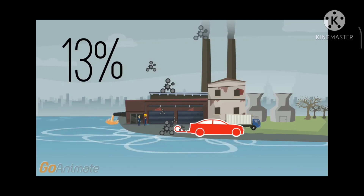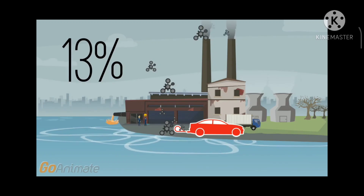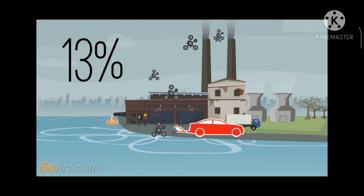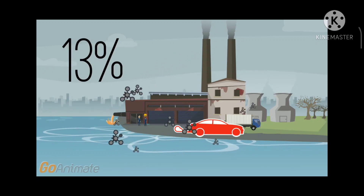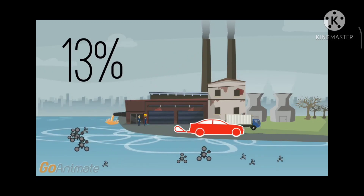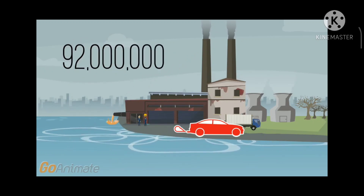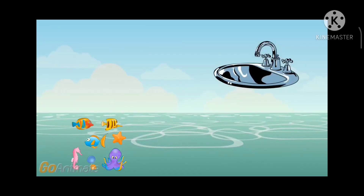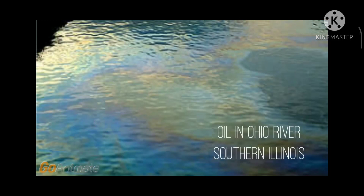One of the worst types of water pollution is oil pollution. Oil spills from tankers and ships create a thick layer above the water in seas and oceans. Since oil does not dissolve, the sludge stays forever.